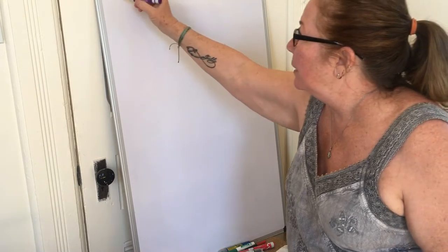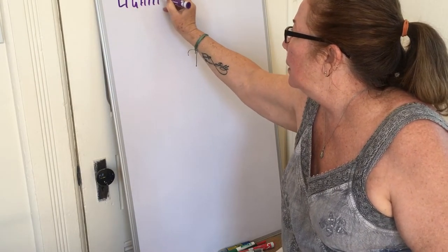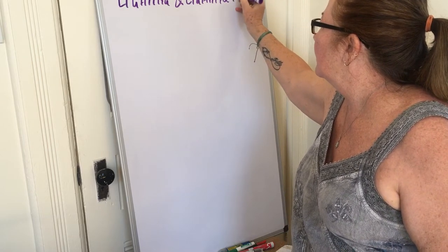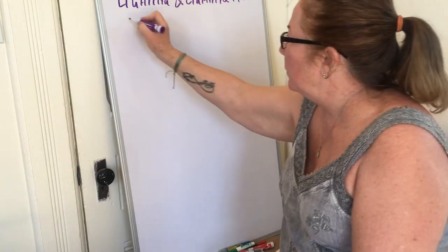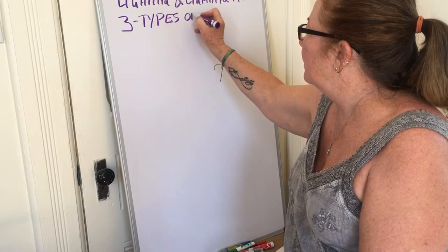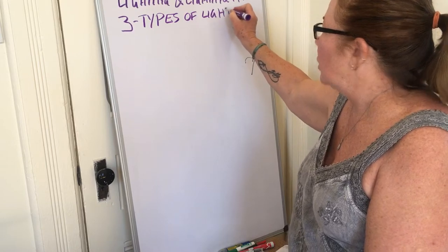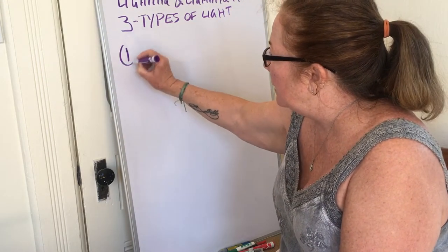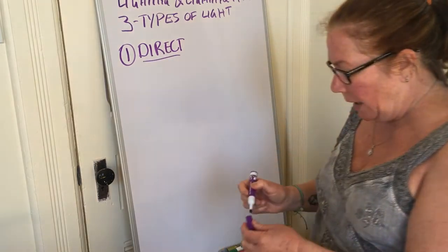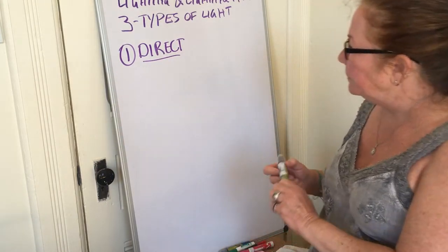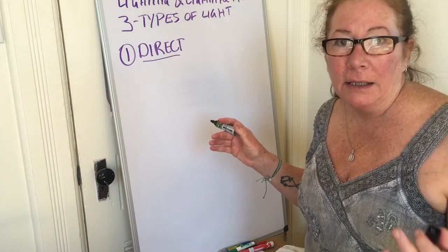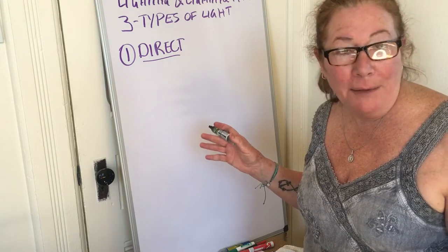So we're going to talk about lighting and lighting types. There are three types of light; we'll talk about one at a time. So number one is direct. Direct light means exactly what it sounds like — light is hitting the subject, whatever that subject may be, directly.